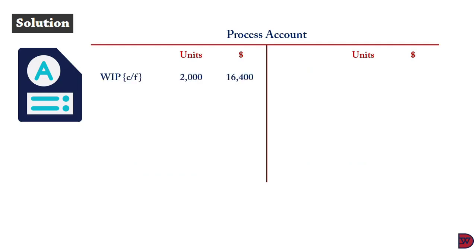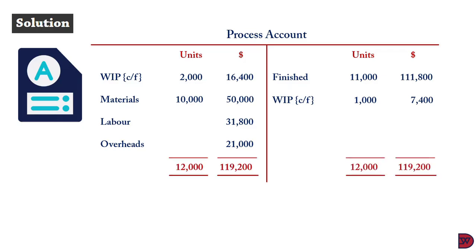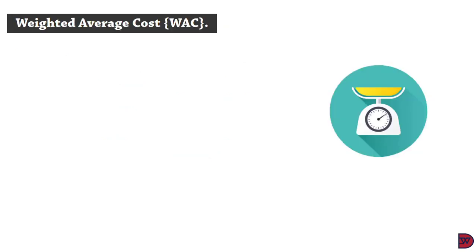For the process account, we bring in the inputs: work in progress brought forward — 2,000 units at $16,400; materials for the current period — 10,000 units at $50,000; labor — $31,800; overheads — $21,000. On the output side: 11,000 finished units at $111,800 and closing work in progress of 1,000 units at $7,400. Both sides close at 12,000 units and $119,200.